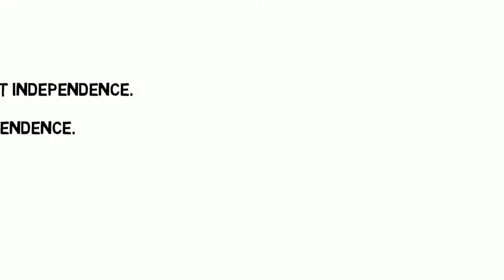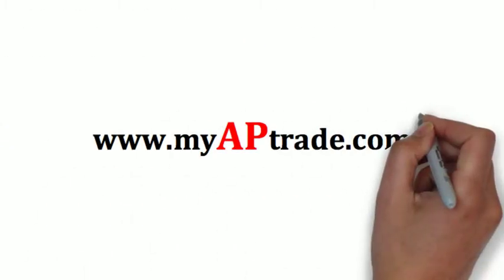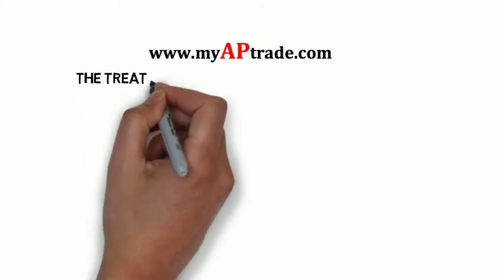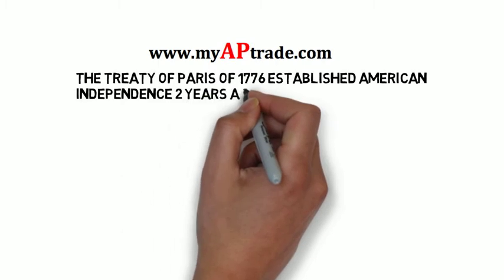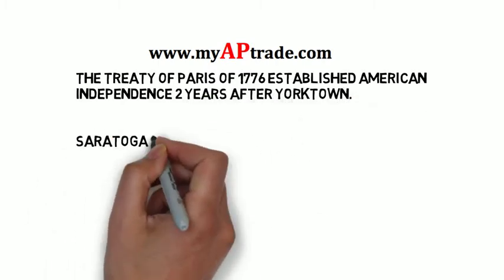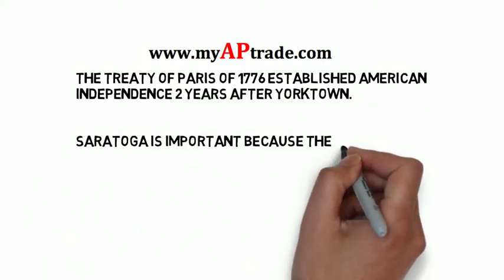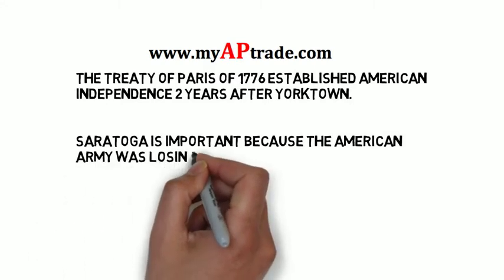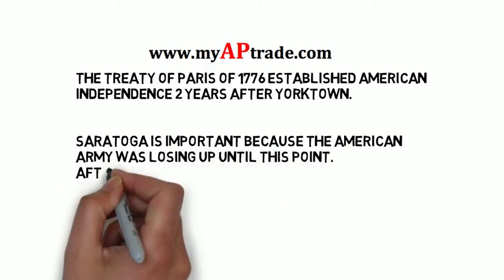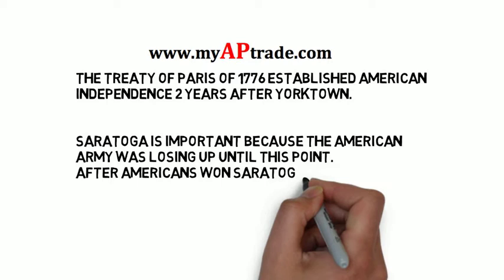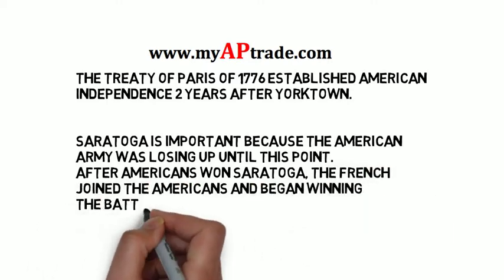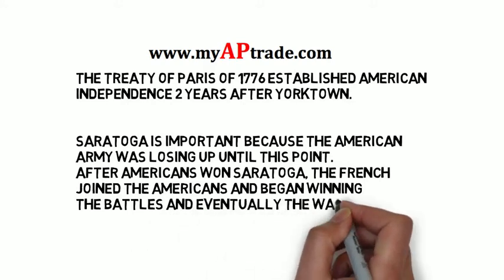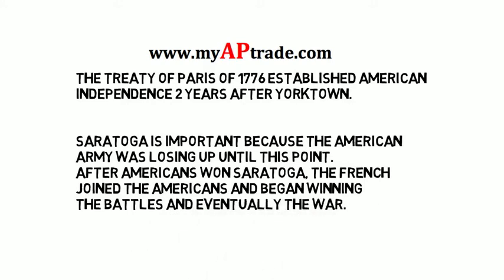George Washington led the troops and ended up winning the war against Britain. The Treaty of Paris established American independence two years after the final battle of Yorktown. The only battle worth mentioning for the AP exam is the Battle of Saratoga. Saratoga is important because the American army was losing up until this point. After Americans won Saratoga, the French decided to join and help the Americans defeat Britain, after which the American army began winning most battles and eventually the war.